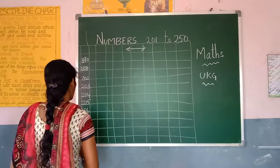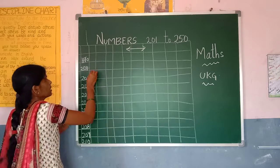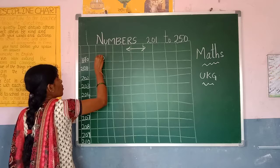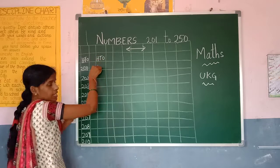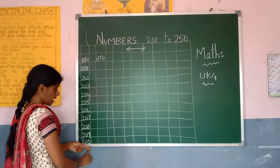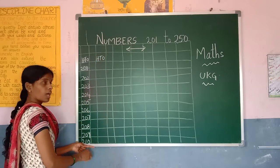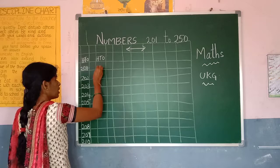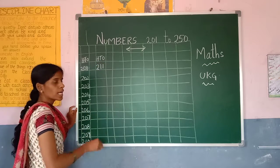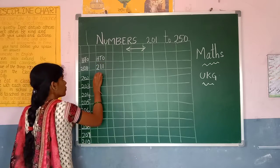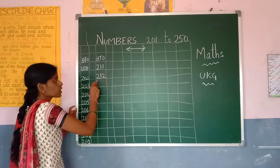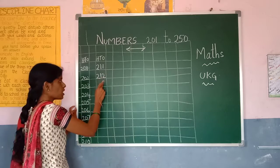Okay? Leave one line and again you have to mention H-T-O. Now 210, after comes 211. So 2-1-1, 211. 2-1-2, 212.